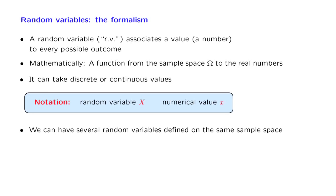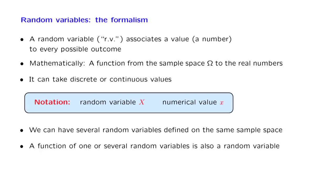One point that we made earlier is that for the same probabilistic experiment, we can have several random variables associated with that experiment, and we can also combine random variables to form new random variables. In general, a function of random variables has numerical values that are determined by the numerical values of the original random variables, and so ultimately they are determined by the outcome of the experiment. Therefore, a function of random variables is also a random variable.